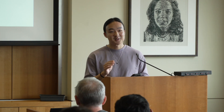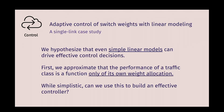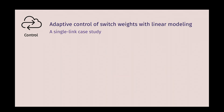Parsimon estimates tail FCT slowdown — observed flow completion time relative to ideal on an unloaded network — with a tight estimate across all percentiles on a network with thousands of hosts. While NS3 took 11 hours, Parsimon took 80 seconds. We also have ongoing efforts to further accelerate predictions using machine learning. For a quick case study on control: can we adjust switch weights to meet SLOs? We hypothesize that even simple linear models can drive effective control decisions. Using a framework by Filieri, Hoffman, and Maggio for synthesizing a single-input single-output controller, we approximate the performance of a traffic class as a linear function of its weight allocation.